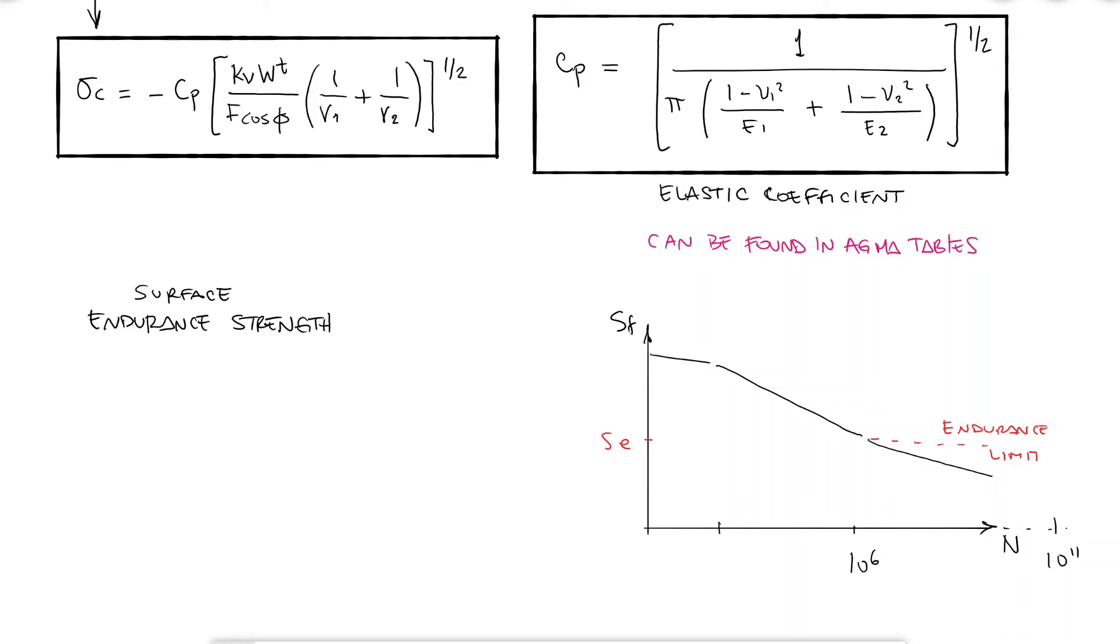What we use as an approximation for the surface endurance strength is a fraction of the hardness of the material. For example, for cast iron, the surface endurance strength would be 32% of the Brinell hardness.